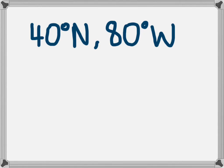Here's an example of how we would write a location. If we had a place that was 40 degrees to the north of the equator and then 80 degrees to the west of the prime meridian, we would write it as 40 degrees north, 80 degrees west. And this would be a place on the east coast of the United States of America.